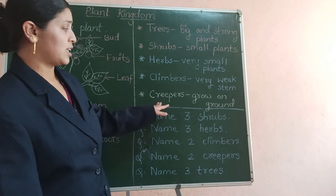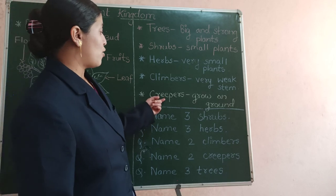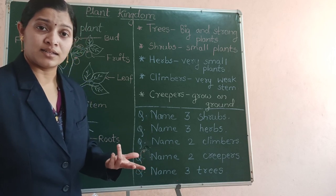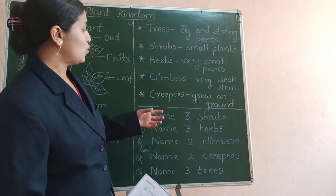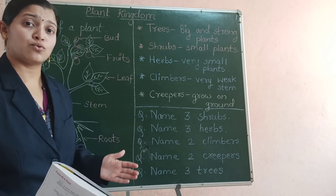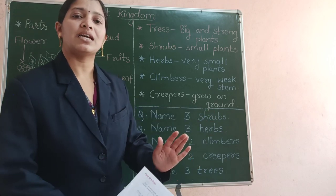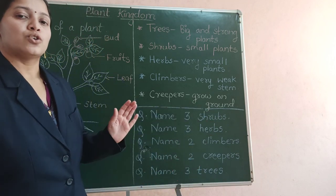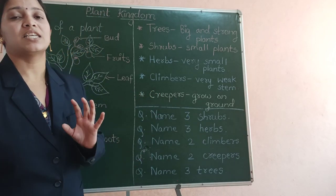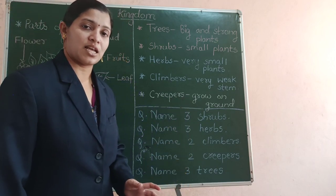Creepers also have fruits which are very heavy. Examples of creepers are pumpkin, watermelon and bottle gourd. These fruits are huge in size and much in weight. The stems of these creepers are very very weak and so they grow on the ground itself.